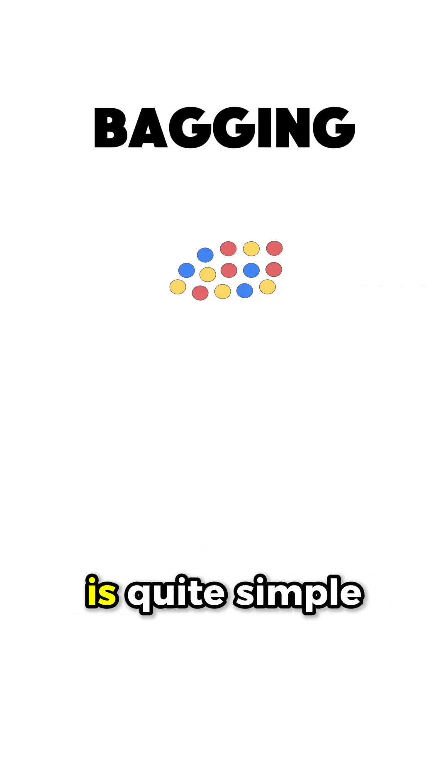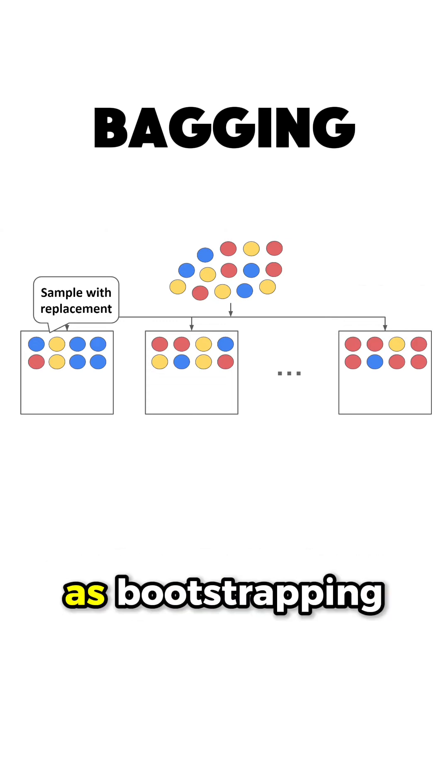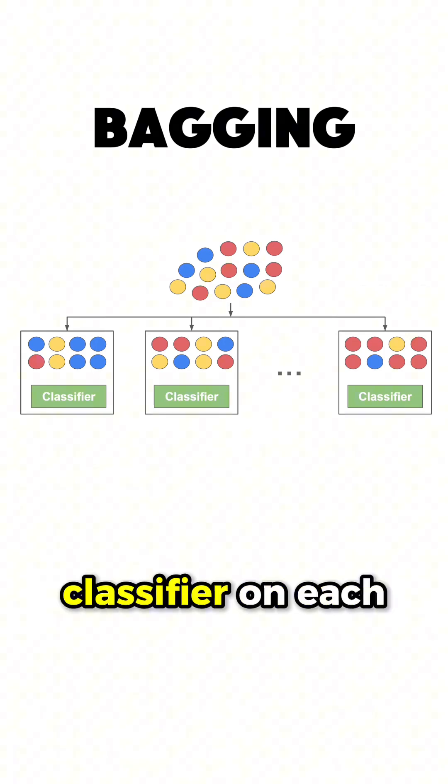What Bagging does with this dataset is quite simple. You create N sub-datasets of equal size by sampling with replacement from the original dataset, a technique known as bootstrapping, and train a classifier on each sub-dataset.